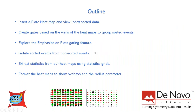For today's webinar, we'll be focusing on learning the ins and outs of index sort data with plate heat maps. We'll show you how to insert a plate heat map and view the index sorted data, create gates based on the wells of the heat map to group sorted events, explore the emphasize on plots feature, use color dot plots to isolate sorted events from non-sorted events, extract statistics using heat map statistics grids, and format heat maps to show overlays or multiple files and statistics using things like the well radius parameter.